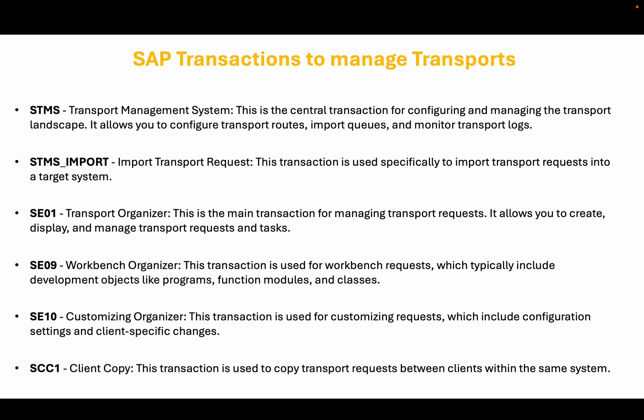These are the SAP transactions used to manage the transport management system in SAP. The first one is STMS, which is the central transaction for configuring and managing the transport landscape. It allows you to configure transport routes, import queues, and monitor transport logs. Then STMS_IMPORT, which is used specifically to import transport requests into a target system.